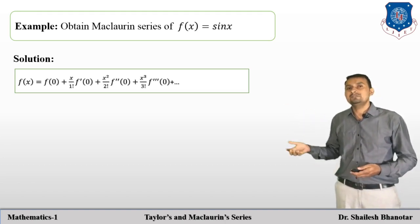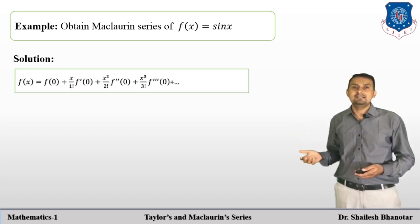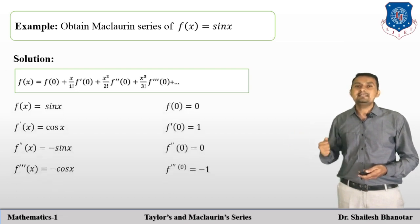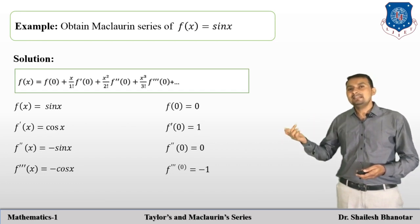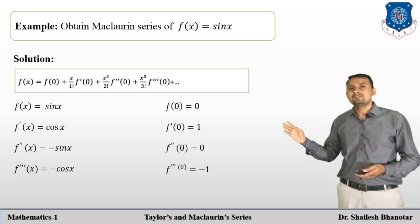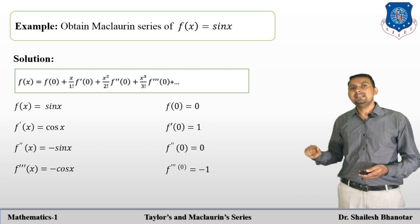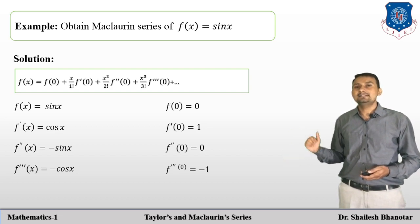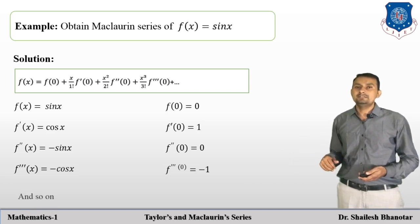For f(x) = sin x, we need to determine f(0), f'(0), f''(0), and so on. f(0) = sin 0 = 0. The first derivative is cos x, so f'(0) = cos 0 = 1. The second derivative is −sin x, so f''(0) = 0. The third derivative is −cos x, so f'''(0) = −1, and so on.